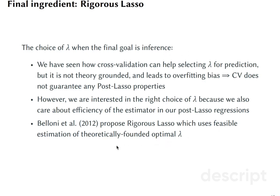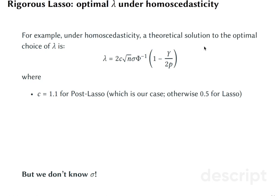Rigorous Lasso uses feasible estimation of theoretically founded optimal lambda. Remember, you can do cross-validation to use data-driven approach to finding what lambda gives you the best prediction. But sometimes there is a wide set of lambdas that give sort of the same kind of predictions, and with cross-validation we still tend to overfit. The optimal lambda using theoretical solution would look like this: it's a formula which has several ingredients in it.